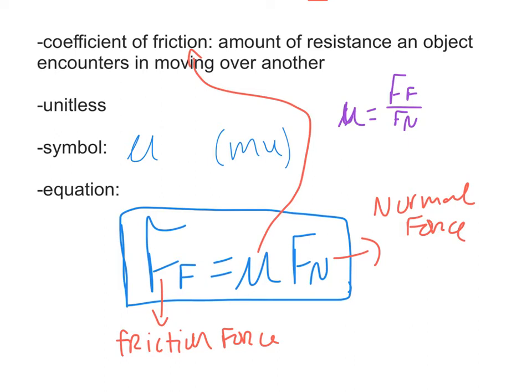You might also see, in terms of the symbol for coefficient of friction, if it's static friction, you might see mu S. If it's kinetic friction, you might see mu K. So if you ever see mu S or mu K, it's telling you what type of friction that is.